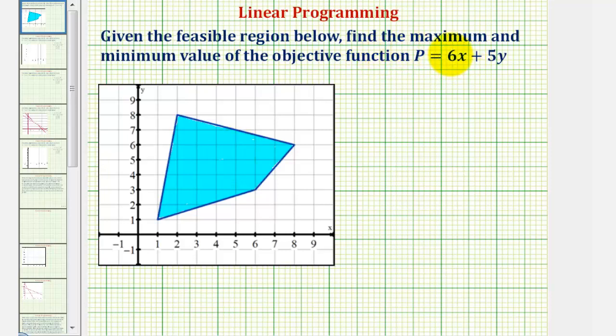We want to find the maximum and minimum value of the objective function, P equals 6x plus 5y. The fundamental theorem of linear programming tells us that the maximum and minimum values of the objective function under the given constraints occur at the corners or vertices of the feasible region.